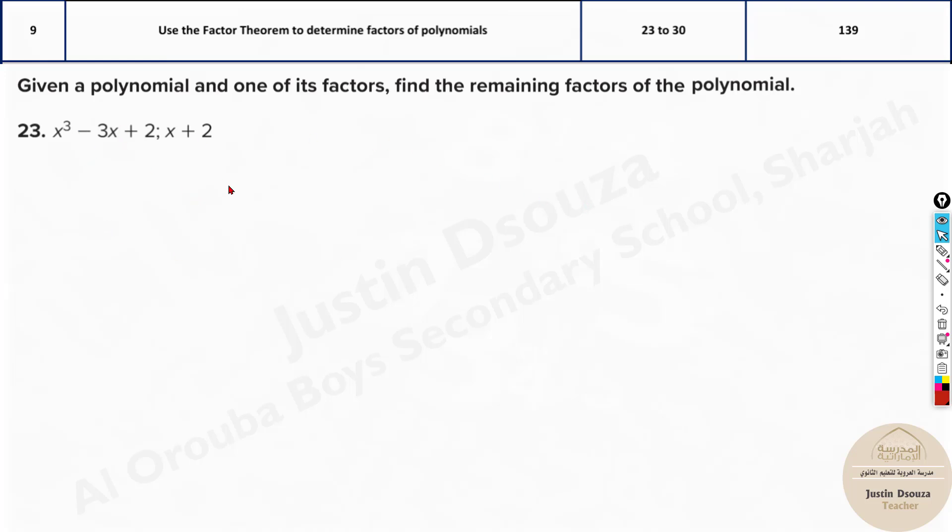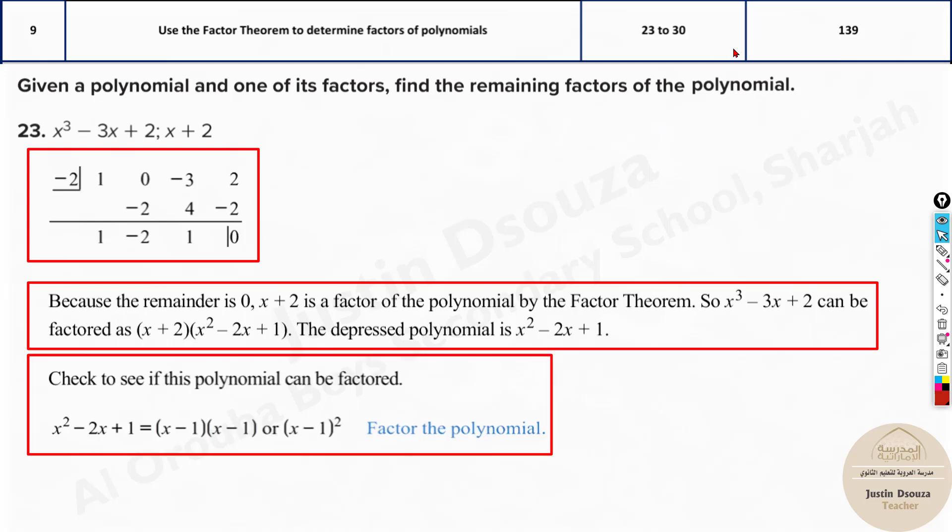Now I'll tell you some shortcut methods. The actual method is just like this and you will get the answer. What you can do is directly from the final answer, you can check which is the correct answer.